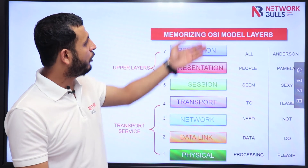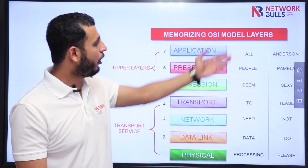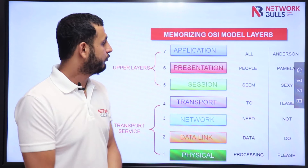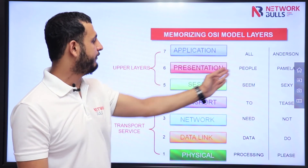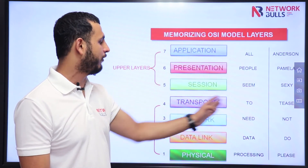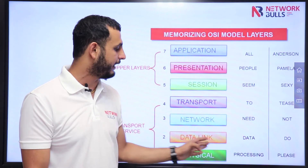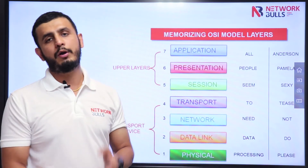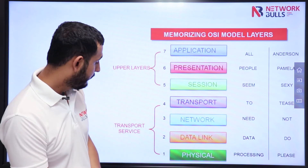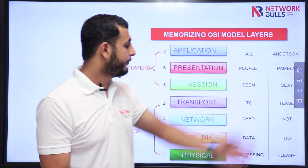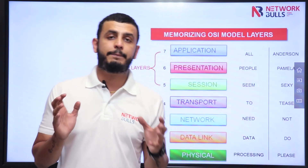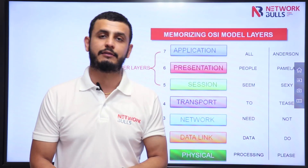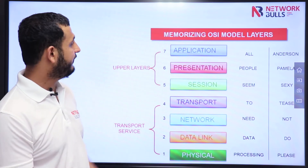If you want to memorize the layers from top to bottom, use this keyword: 'All People Seem To Need Data Processing.' A stands for Application, P for Presentation, S for Session, T for Transport, N for Network, D for Data Link, P for Physical. If you want to remember them from bottom to top, you can remember: 'Please Do Not Throw Sausage Pizza Away.' These are the seven layers — there are multiple ways to memorize them.